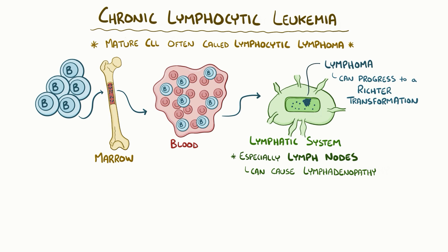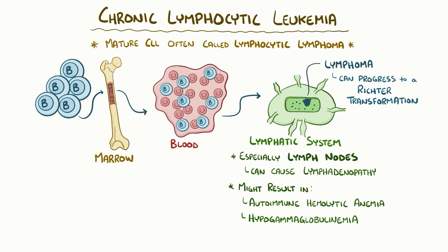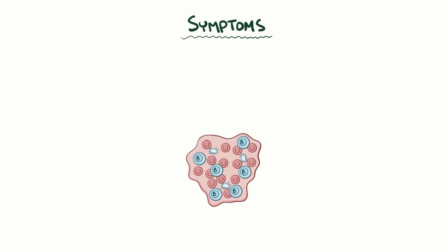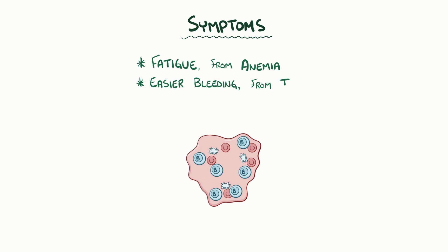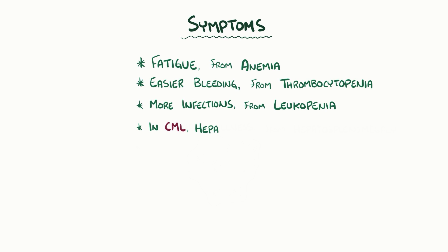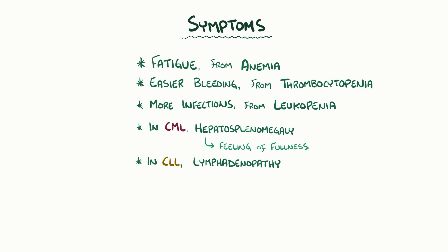Because B cells normally work in the immune system, the reduced or adverse functioning of CLL cells might result in autoimmune hemolytic anemia, where the cells attack the body's own red blood cells and kill them off, or hypogammaglobulinemia, where the cells don't produce enough gamma globulins. Symptoms of both CML and CLL include fatigue because of the anemia, easier bleeding because of the thrombocytopenia, and more frequent infection because of the leukopenia. In CML, the hepatosplenomegaly often causes a feeling of abdominal fullness, while the lymphadenopathy of CLL often causes mild but localized pain in the lymph nodes.